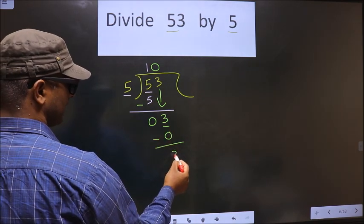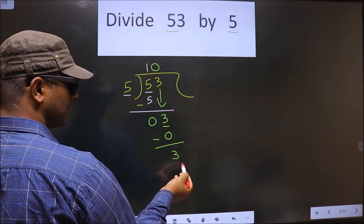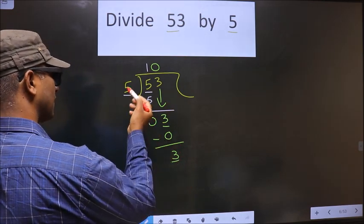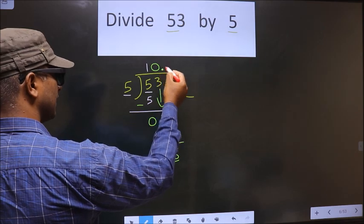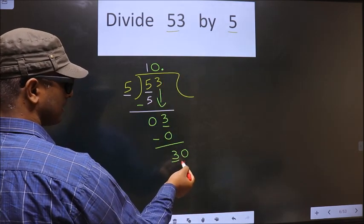So now you subtract. Now you get 3. Now we did not bring any number down. This number is smaller than 5. So you put decimal and 0 here. Now here we got 30.